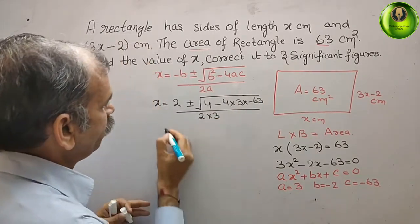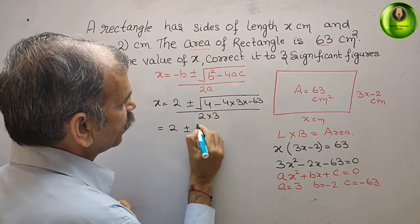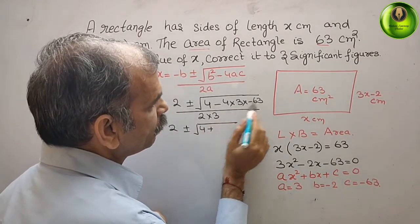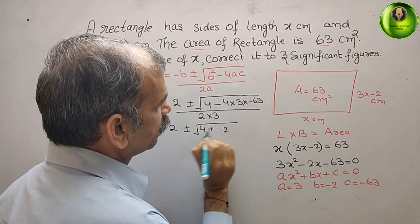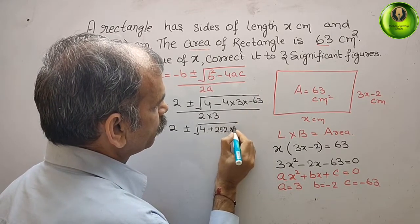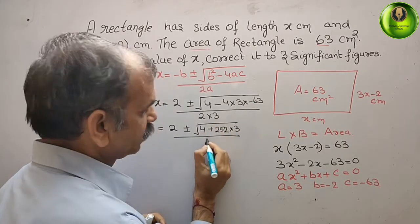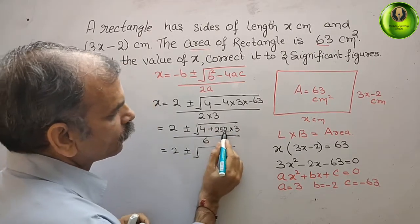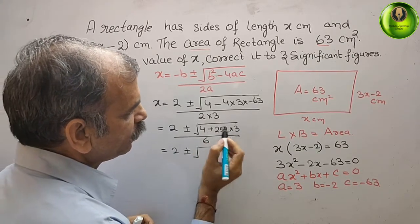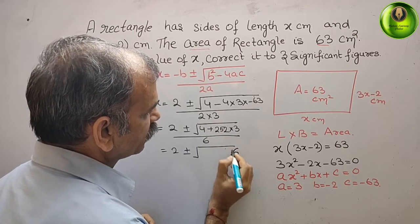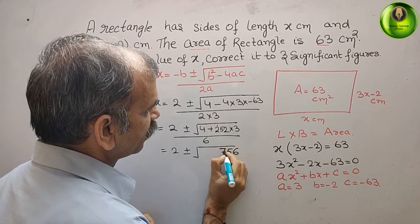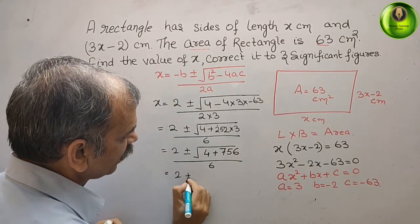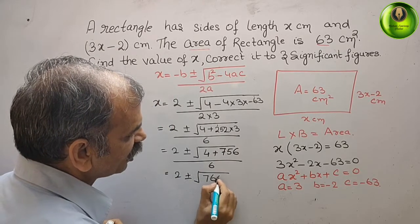Now, solve this. We get 2 plus and minus root under 4 minus into minus is plus. Now, multiply it. 4 into 3 is 12, 24 plus 1 is 25, into 3, by 6. That gives you 2 plus and minus root under now. Just multiply them. What we will get? 3 into 2 is 6. 6, 6, 15, 1 carry 7, plus 4, by 6. What is that? We can see that 2 plus and minus root under 760, by 6.